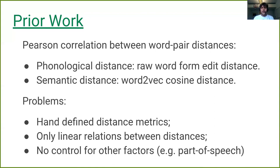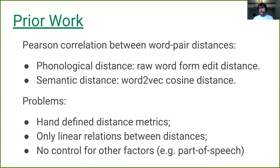The problem with this approach is that researchers had to hand-define the distance metrics they used — for example, using cosine distance between word2vec representations for semantic distance and raw edit distance for the phonological one. That used a lot of assumptions. The second problem is that since they were using Pearson correlation, only linear relationships between both metrics could be found, and nonlinear relationships would not be captured. The final issue was that it was very hard to control for other factors like part of speech.